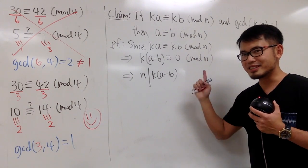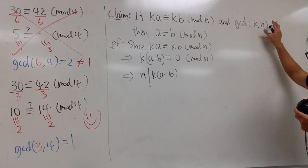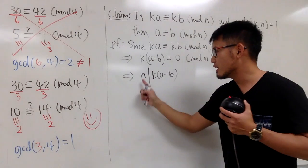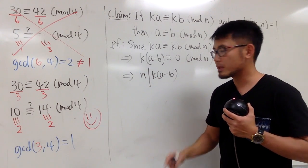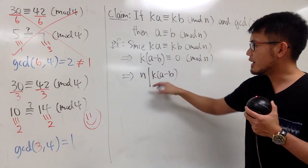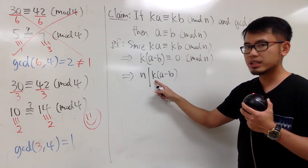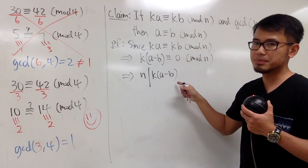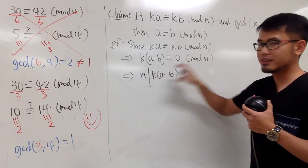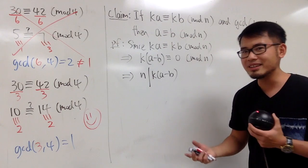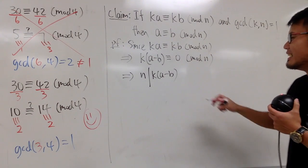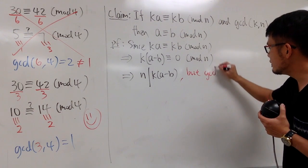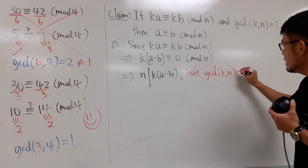And from here, this is the good time to take a look of the other assumption, namely the greatest common divisor of n and k is equal to 1, namely n and k are relatively prime. And the idea is that if you have n divides this, but n and k are relatively prime, that means n has to divide the other factor, namely a minus b. And I have another video on proving that statement. You guys can check that out. I will have the link to the video in the description for you guys.